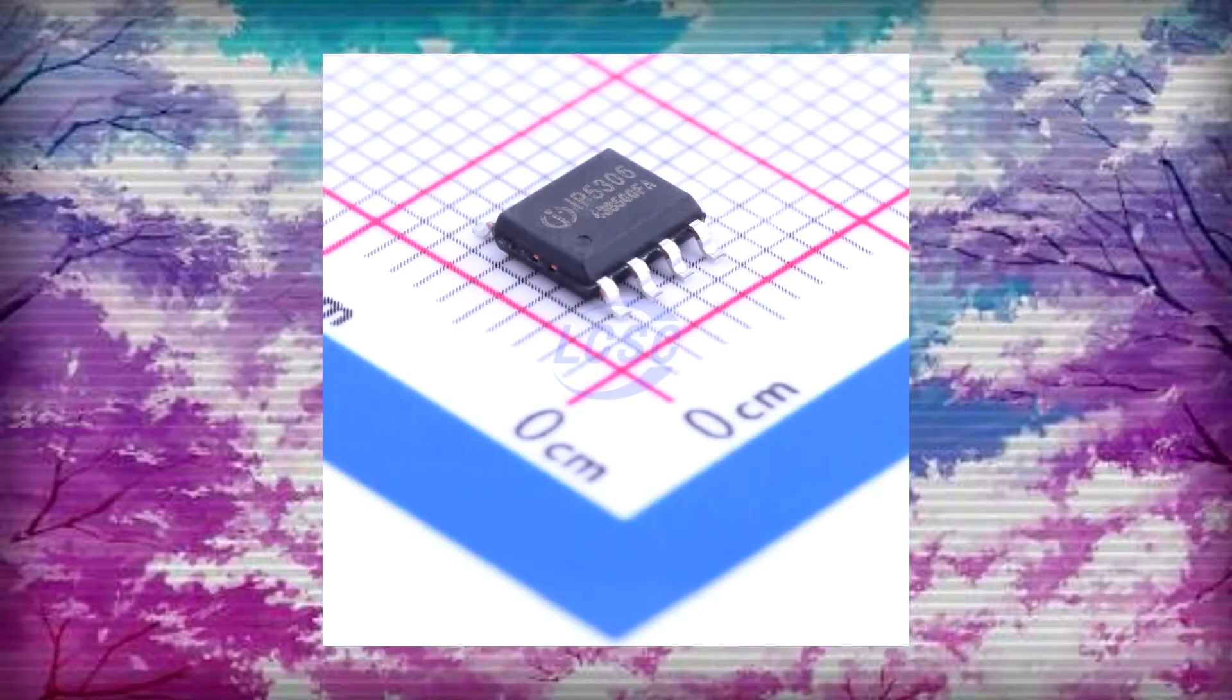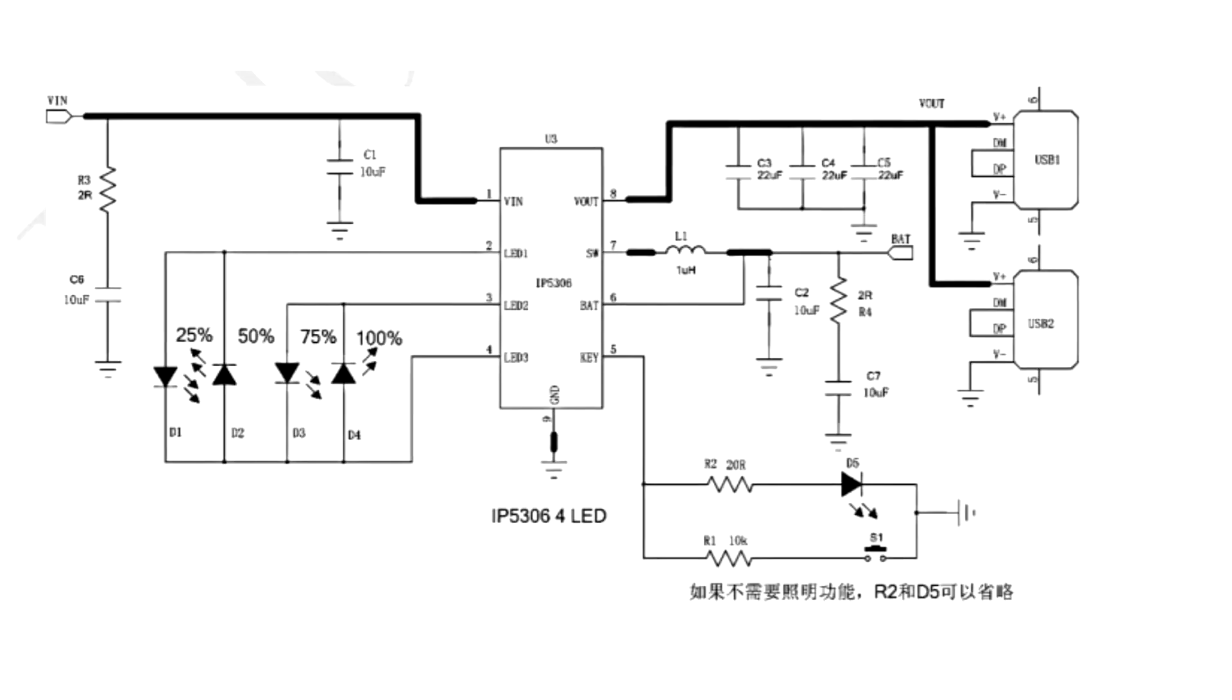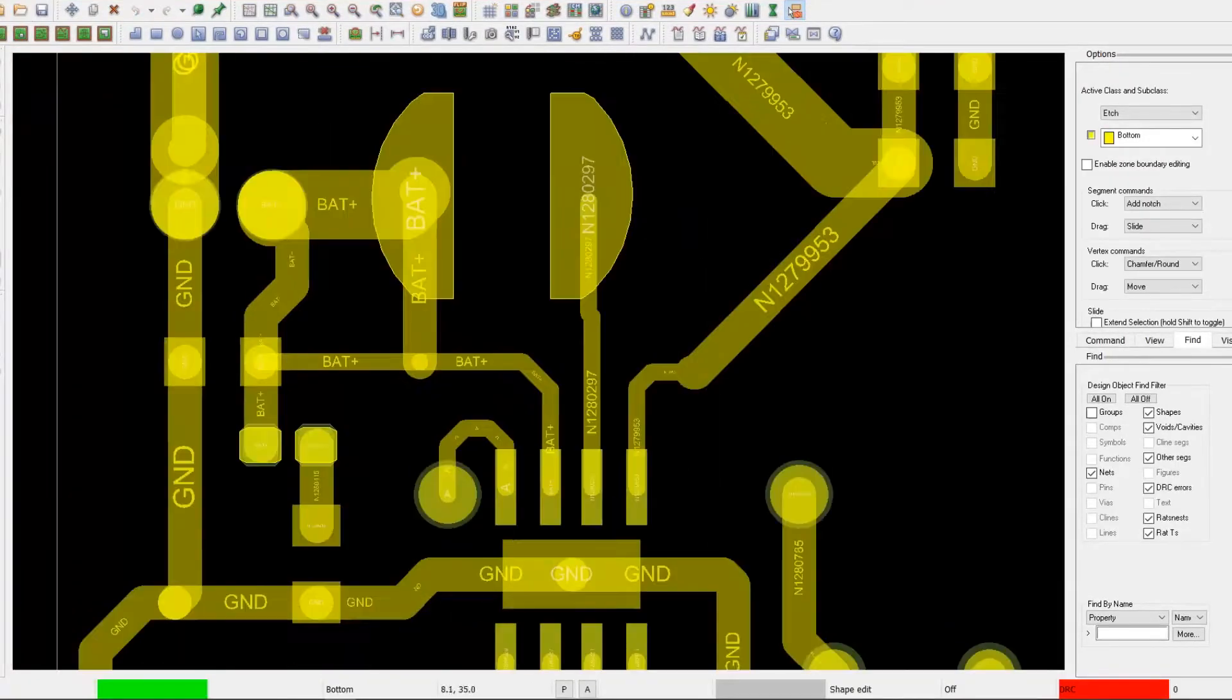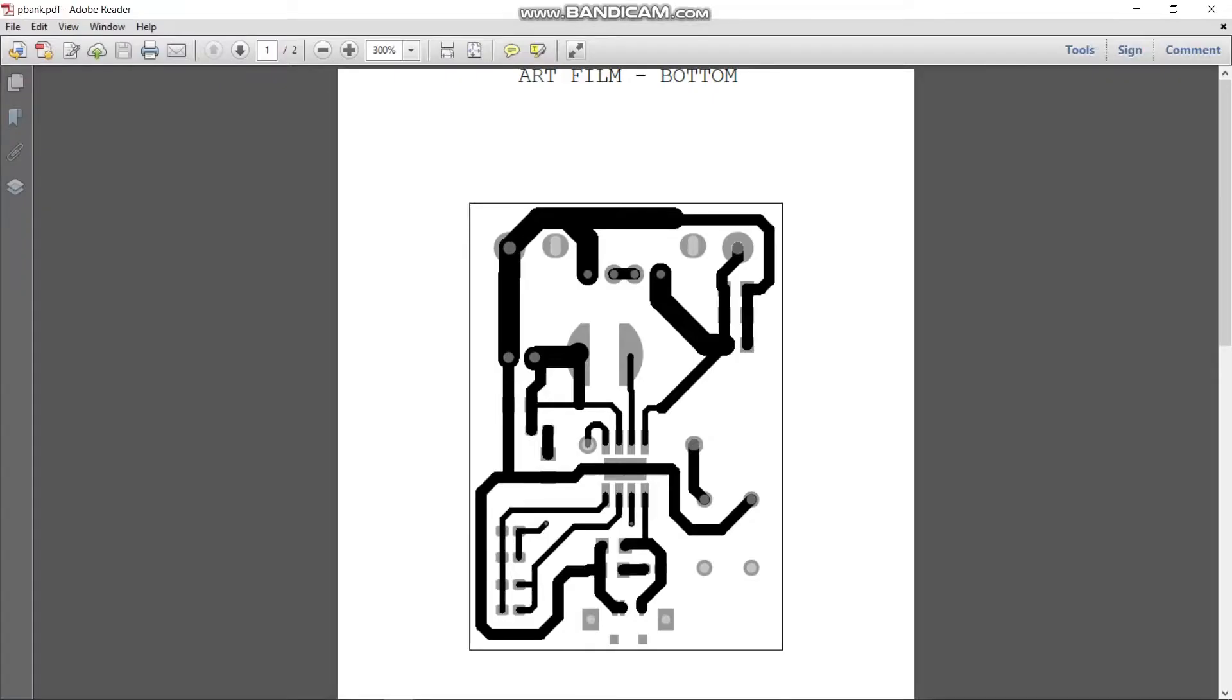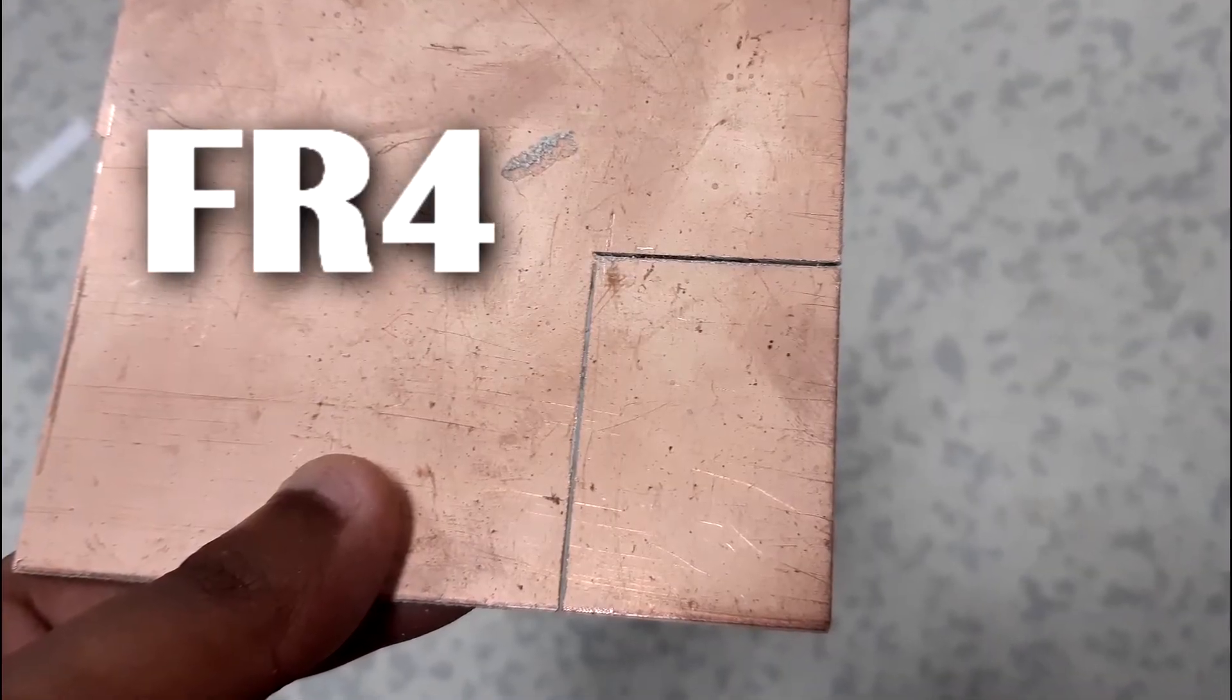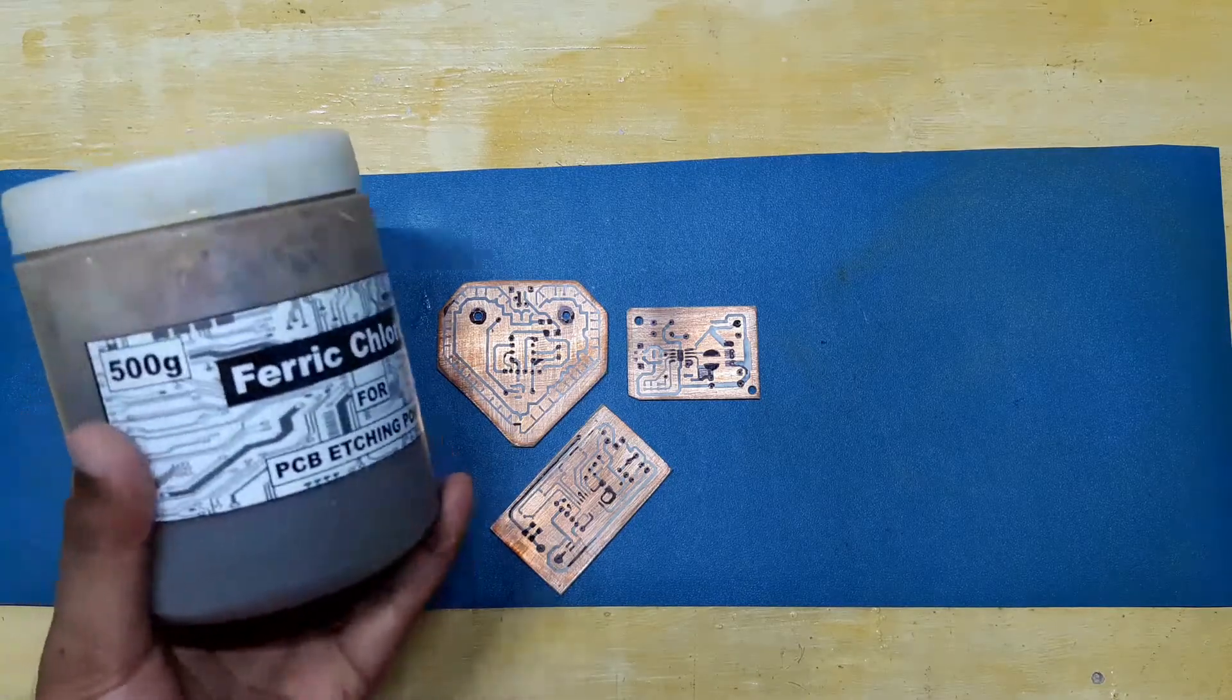In order to use the IP5306 IC, we need to make a circuit. So I designed its circuit in a PCB designing software and printed out its layout on glossy paper. Then by using toner transfer method, I transferred the ink from paper to FR4 copper board and etched the board with etching powder solution.